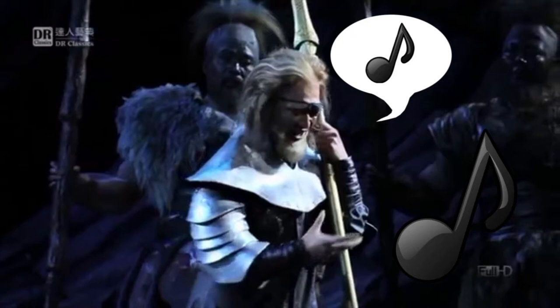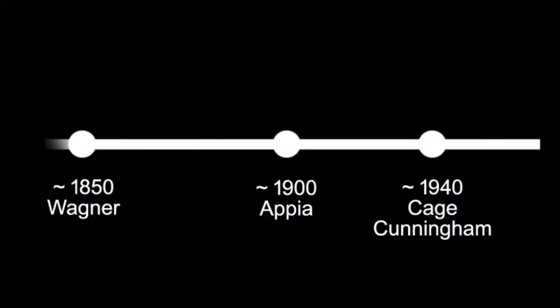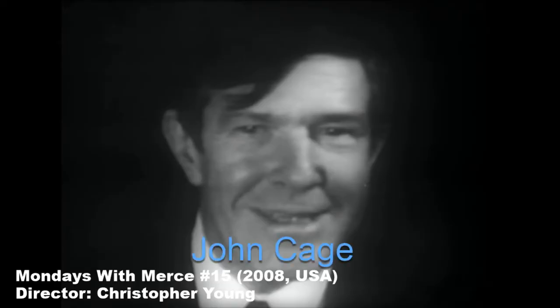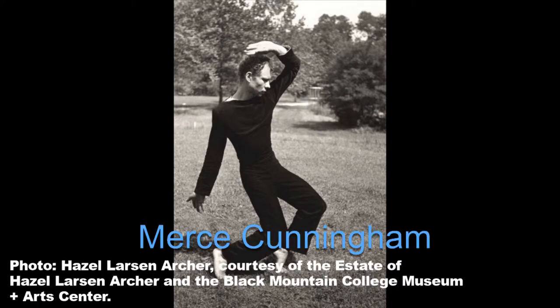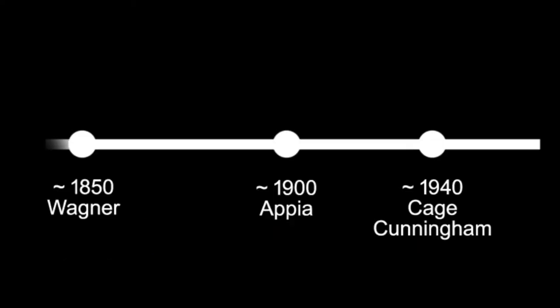So Appia planned to let the movements be completely parallel to the music. Then about 40 years later, in the 1940s, two other artists talked about how to match music and movement: the composer and musician John Cage and the choreographer and dancer Merce Cunningham. They followed a completely different strategy.